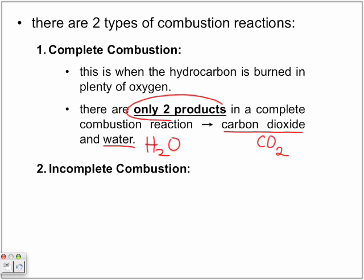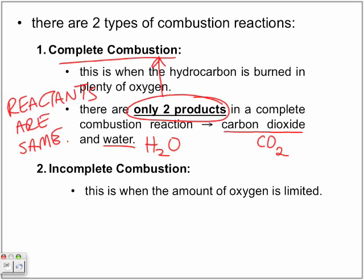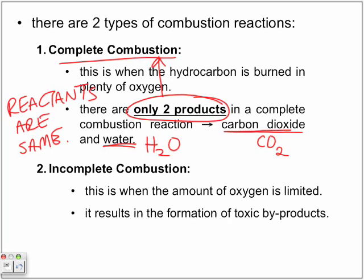In complete combustion there are only two products. Incomplete combustion is when the amount of oxygen is limited — there's not enough oxygen. The reactants can be the same. In a good supply of oxygen, our products are going to be carbon dioxide and water. But if it's in a poor supply of oxygen, then we have toxic byproducts in the form of carbon monoxide and carbon soot.